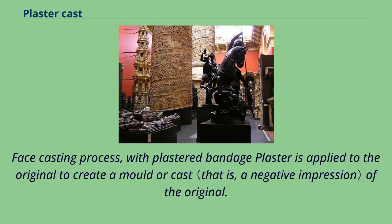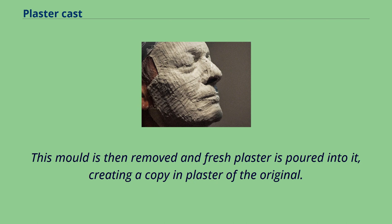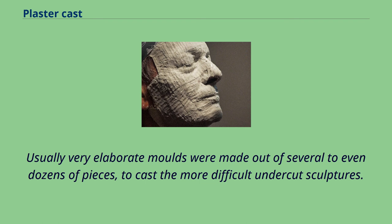In the face casting process, plastered bandage plaster is applied to the original to create a mold or cast of the original. This mold is then removed and fresh plaster is poured into it, creating a copy in plaster of the original. Usually very elaborate molds were made out of several to even dozens of pieces, to cast the more difficult undercut sculptures.